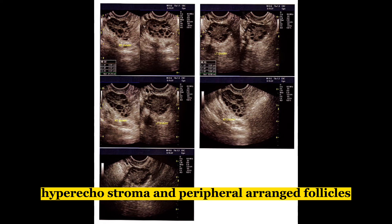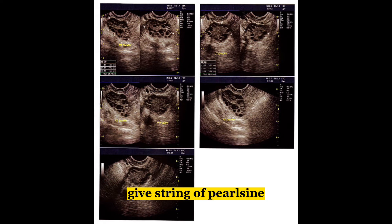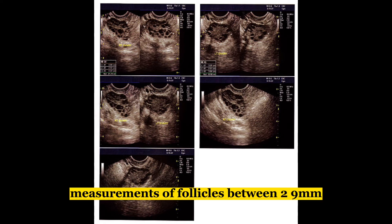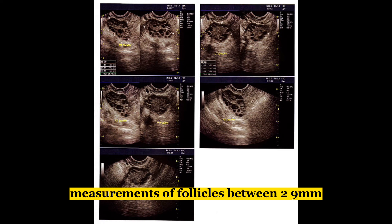Hyperechoic stroma and peripherally arranged follicles give the string of pearl sign. Follicle measurements are between 2 to 9 millimeters.